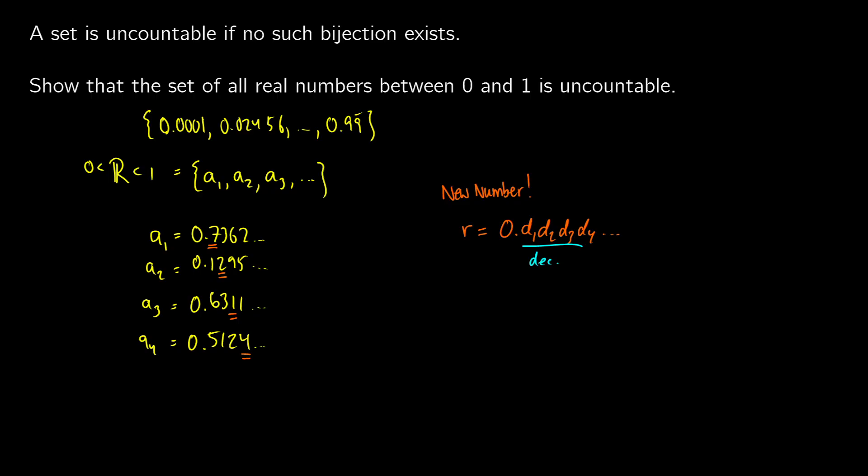And how we're going to define this is we're going to say that di, so the ith position, is going to be one of two things. It's going to be 2 if aii is not equal to 2. So let me explain this. If we have aii, then what this means is that a11 would be the first number, first decimal. If we have a22, that would be second number and second decimal.